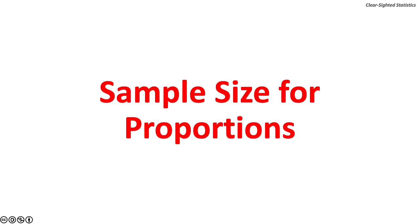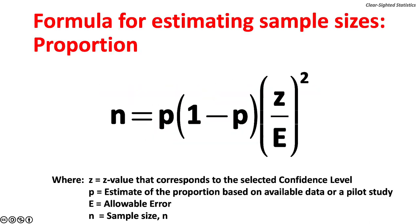Estimating sample size for proportions. Here is the formula for estimating sample size for a proportion. The sample size, N, equals the sample proportion, P, times one minus the sample proportion, times the z value over the allowable error, squared.